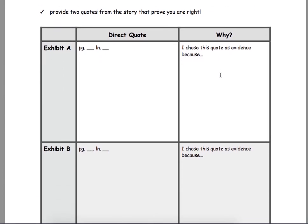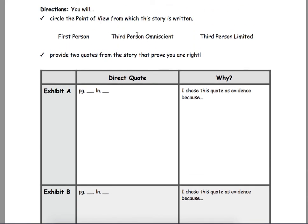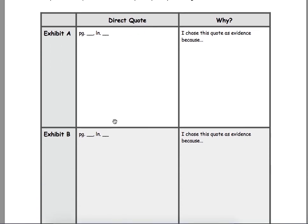Once you've selected one of those, you need to back up your thinking. So, you need to go back into the story. You need to find, and you've got to think like a lawyer here. That's why it says Exhibit A. And you're going to say, well, I think it's third person omniscient, or I think it's third person limited, or I think it's first person. And here's why.